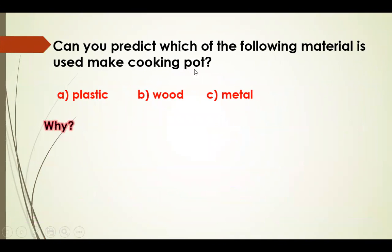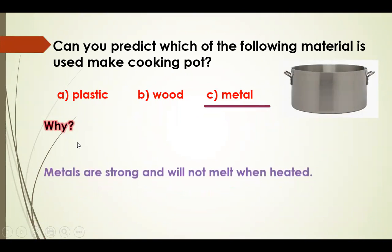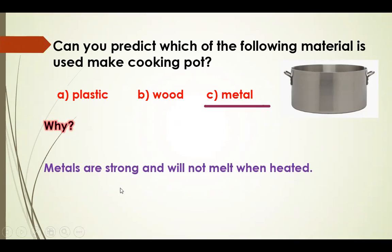Can you predict which of the following material is used to make a cooking pot? Options: Plastic, Wood, Metal. The answer is Metal. Why? Because metals are strong and will not melt when heated.